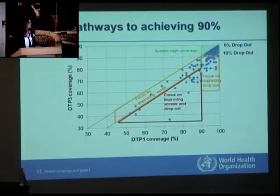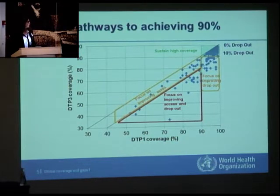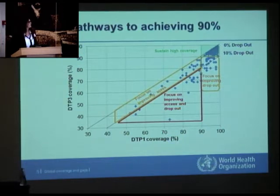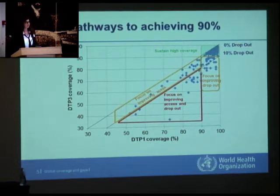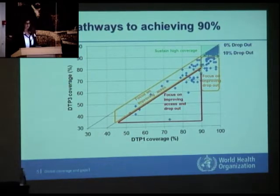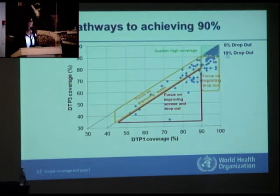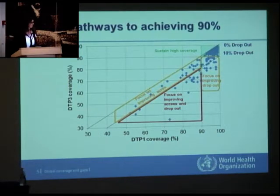If we plot countries with their 2013 coverage, where the X axis represents DTP1 coverage and the Y axis represents DTP3 coverage, we can look at where the problems in immunization programs are — whether the problem is in access or in dropout. The top corner shows countries where we actually want to be, where the job is done and the only goal is to sustain the high coverage, which is also challenging.